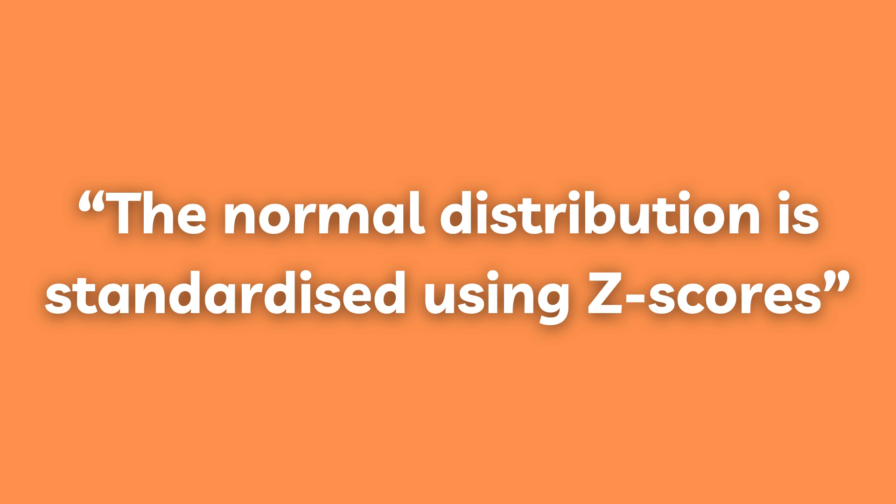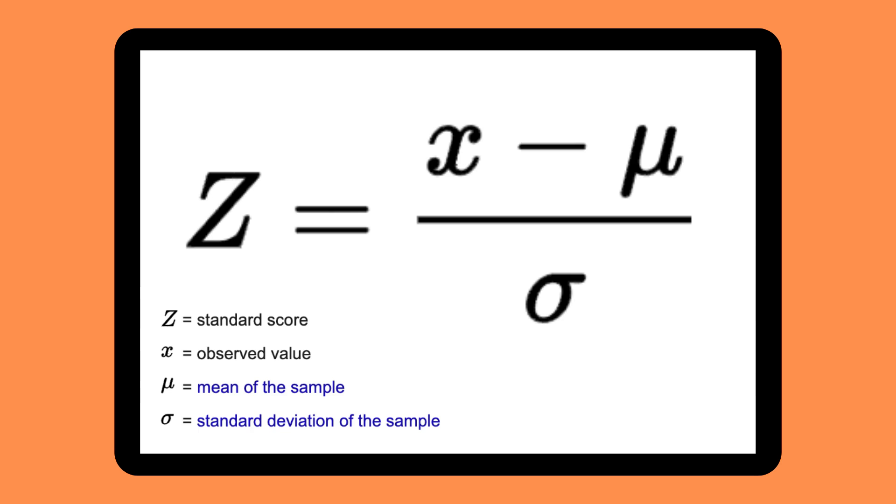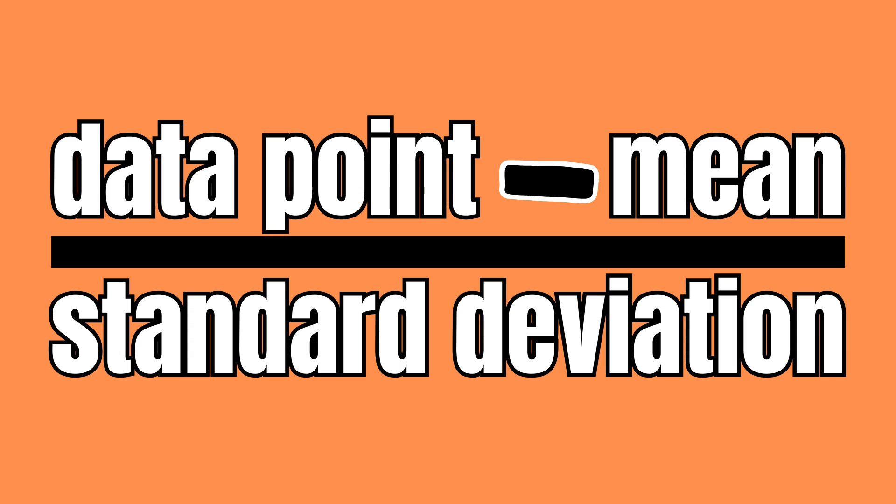The normal distribution is standardized using z-scores to make it applicable across different domains. The z-score is calculated by subtracting the mean of the data set from a select point in the data set and dividing the difference by the standard deviation.